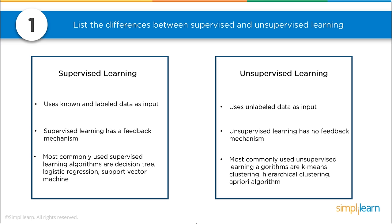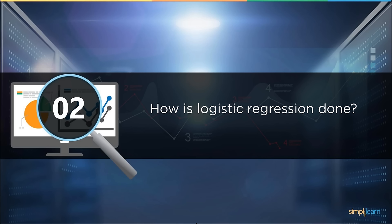A lot of these algorithms work faster on raw data numbers than a deep neural network would. Unsupervised learning uses unlabeled data as input and has no feedback mechanism. The most commonly used unsupervised learning algorithms are k-means clustering, hierarchical clustering, and the Apriori algorithm. K-means and hierarchical clustering are used very frequently. The most important distinction: in supervised learning you have training data and you know the answers, while in unsupervised learning we're grouping things together that look like they go together.